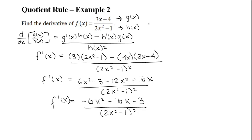So you'd write out g(x) = 3x - 4, take the derivative of it, which is g'(x) = 3.